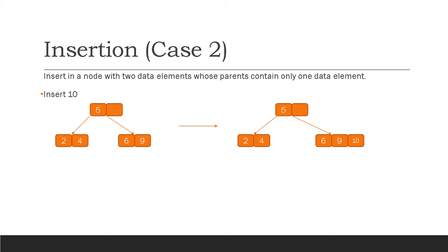The second case for insertion is when we want to insert in a node with two data elements whose parent contains only one data element. For instance, we want to insert 10. Since 10 is greater than 5, we move to the right subtree. Since 10 is greater than 6 and greater than 9, we create a temporary node in the right subtree. We then move the middle element to the parent node and split the node. Here, we moved 9 to the parent node and split so that 6 and 10 become two individual nodes in the middle and right subtree.